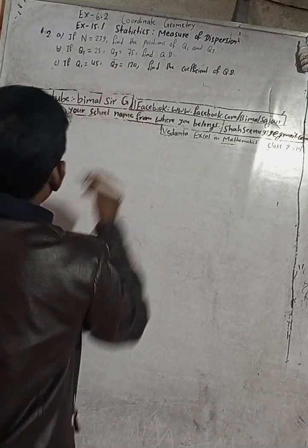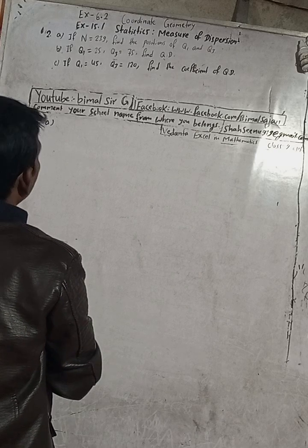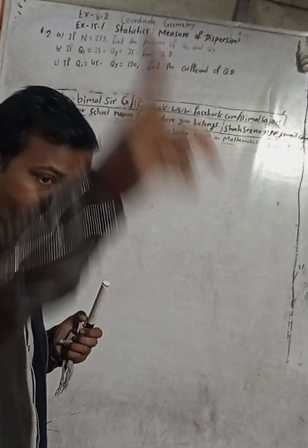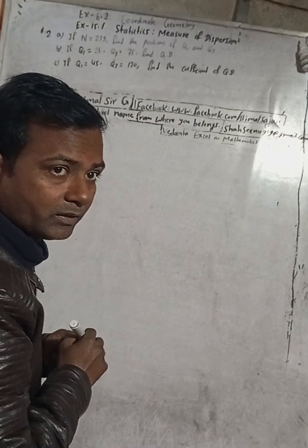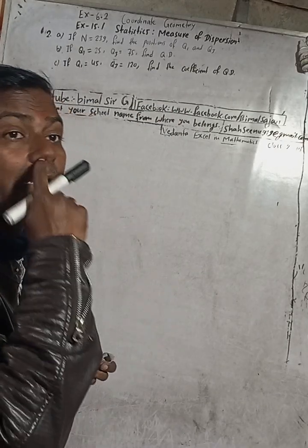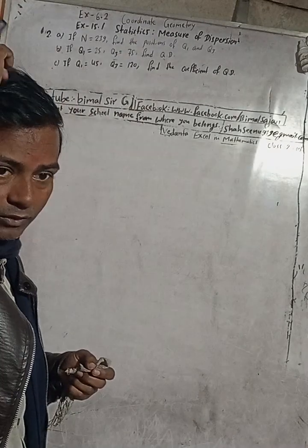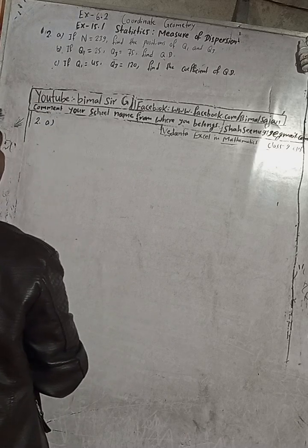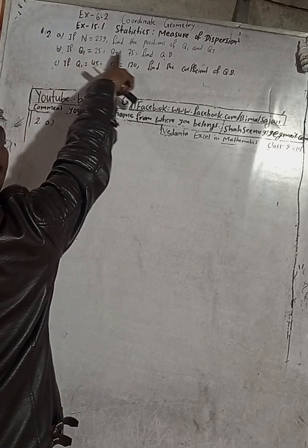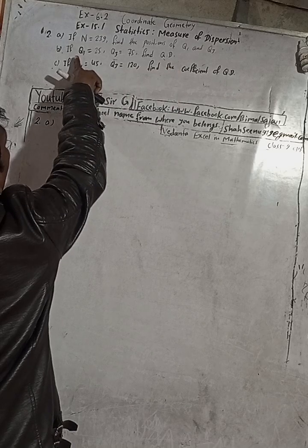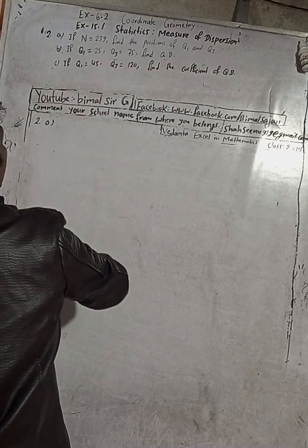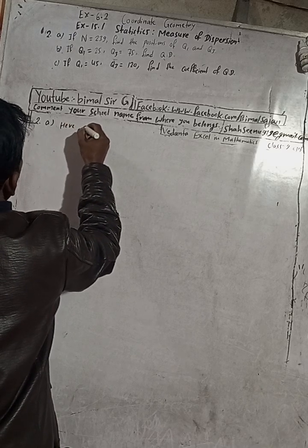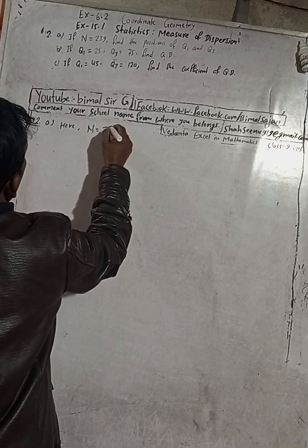Now here the question is: if n is equal to 239, find the position of Q1 and Q3.